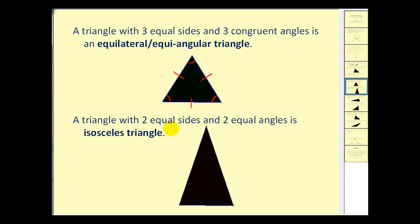Next, a triangle with two equal sides and two equal angles is an isosceles triangle. So this side is equal to this side, and these two base angles are also equal, which makes it an isosceles triangle.